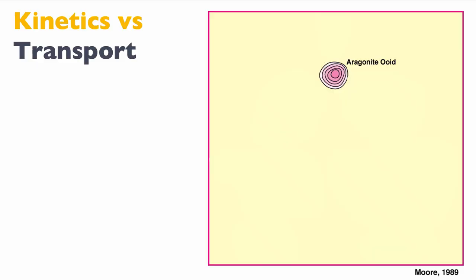Let's look at the implications for porosity modification. Let's say we have an aragonite ooid. Remember, aragonite is unstable. So we put meteoric water on this aragonite ooid.